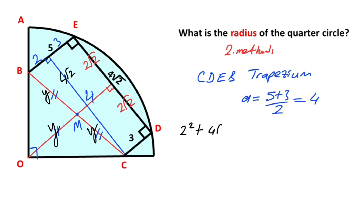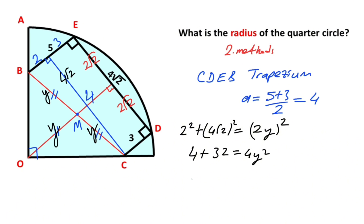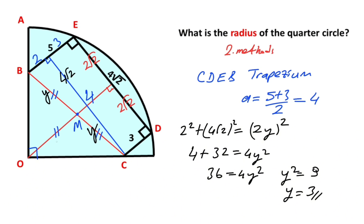So: 2² + (4√2)² = (2Y)². That gives 4 + 32 = 4Y², so 36 = 4Y², meaning Y² = 9 and Y equals 3 units. So here Y equals 3.